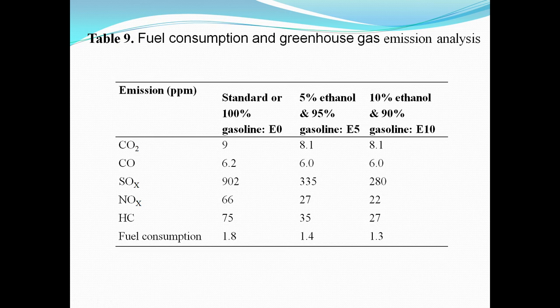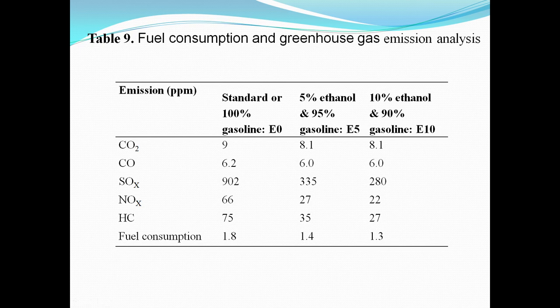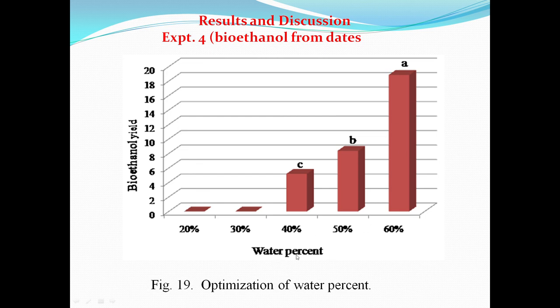For fuel consumption and greenhouse gas emissions, the comparison was made between 100% gasoline, 5% ethanol/95% petrol, and other blends. Carbon dioxide, sulfur oxide, hydrocarbon concentrations were measured. Fuel consumption was slightly higher in the standard but also slightly less with the bioethanol blend. The results showed positive outcomes with 5 to 7% blends giving good emission reductions.